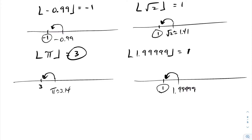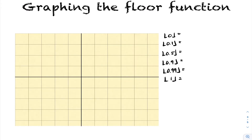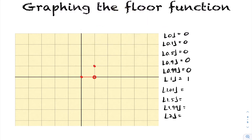Now let's look at graphing the floor function. Starting at the origin and moving right: the floor of zero is zero, the floor of 0.1 is zero, floor of 0.5 is zero, floor of 0.9 is zero, and floor of 0.99 is zero. But the floor of one is one. Visually, we have a solid dot at the origin, a flat line outputting zero, then an open circle just before one, and a jump up to one.